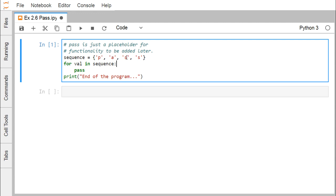So sequence, we are having one sequence here. We are having P, A, S and S, so there is a pass. And for val in the sequence, in this particular for construct, we are having only one statement, that is a pass.